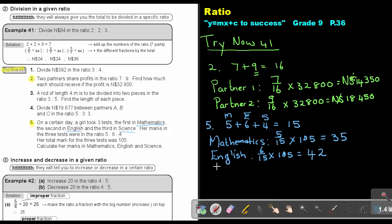And then the last one will be science. And that will be that 4 out of that 15 times 105. And that will give me an answer of 28. So she will get for mathematics 35, English 42, and science 28 marks.